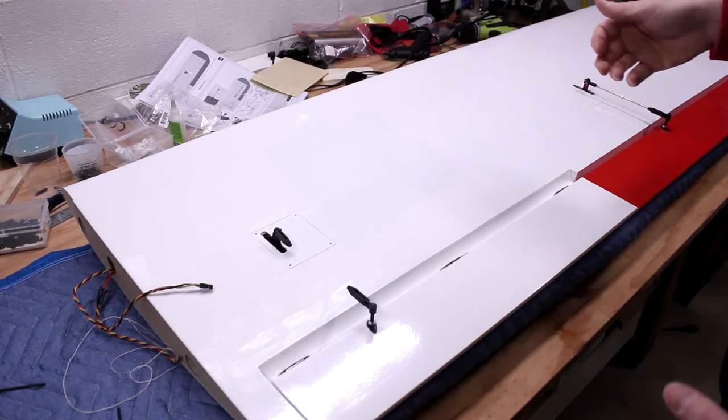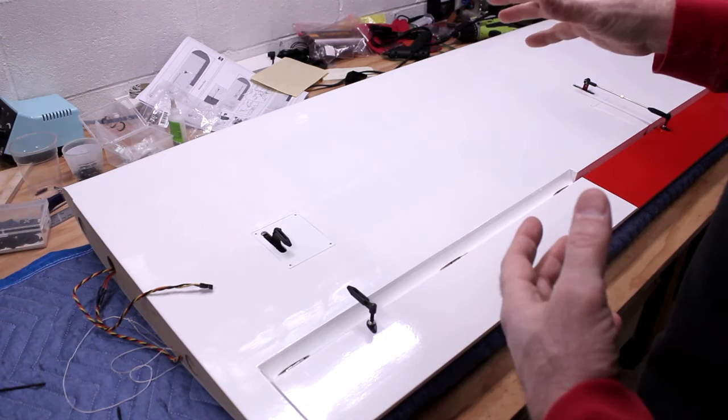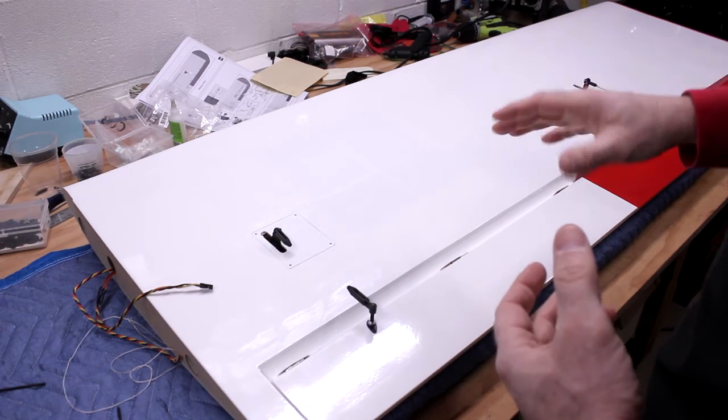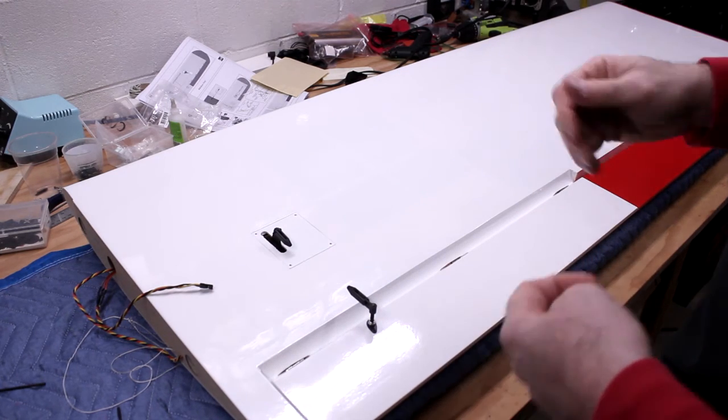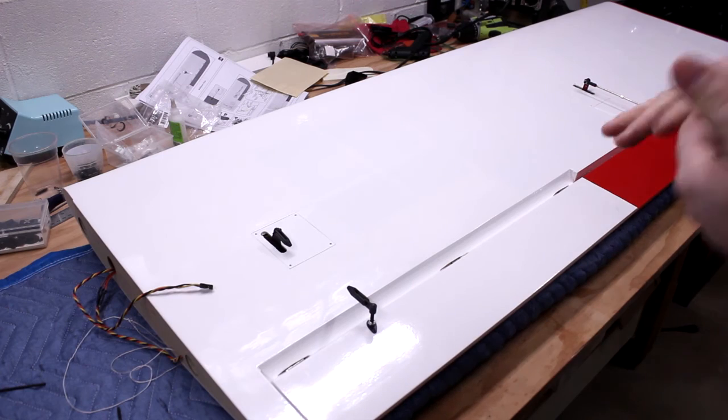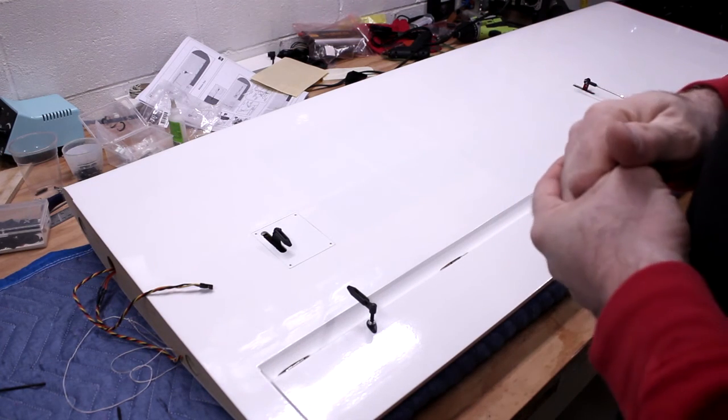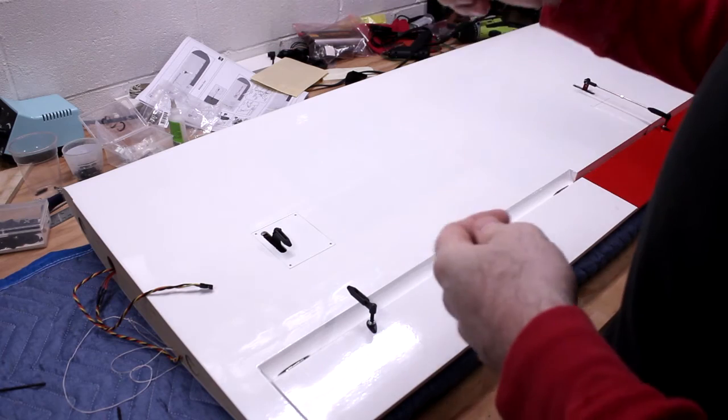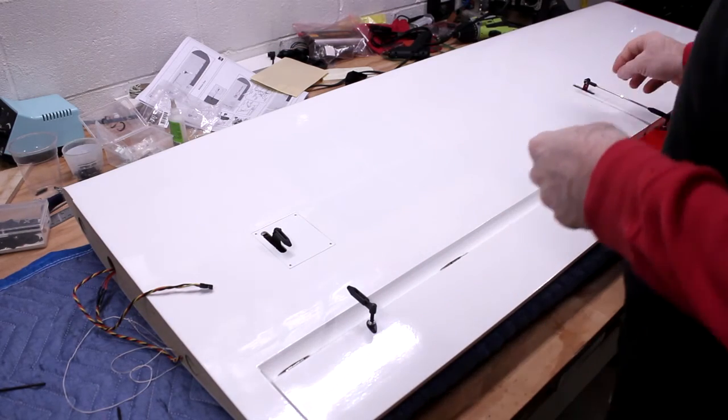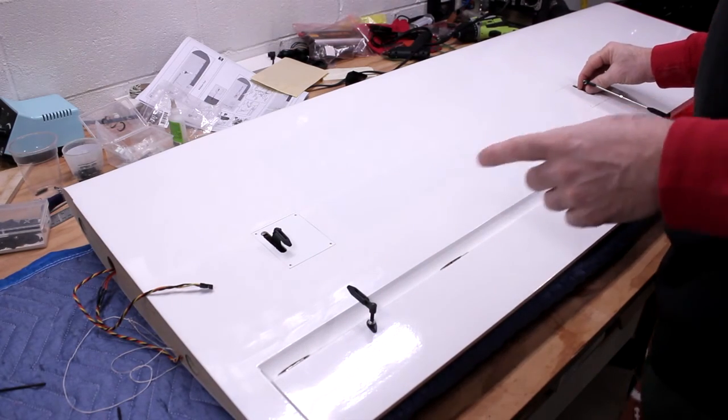When you're assembling the airplane at the field, you're going to have to reach in under the opening in the cabin, the door that you saw in the first video that opens up and down like a scale cub. You're going to have to reach in there and plug in your servo connections.